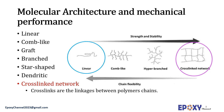The covalently cross-linked network inhibits the free movement of chains, leading to high thermomechanical properties in thermoset resins. It is important to keep in mind that cross-links are the linkages between polymer chains.